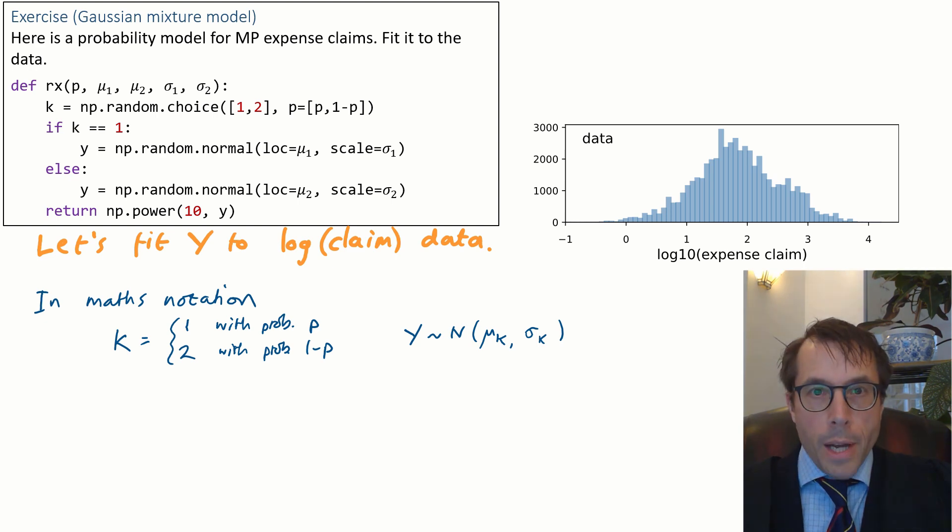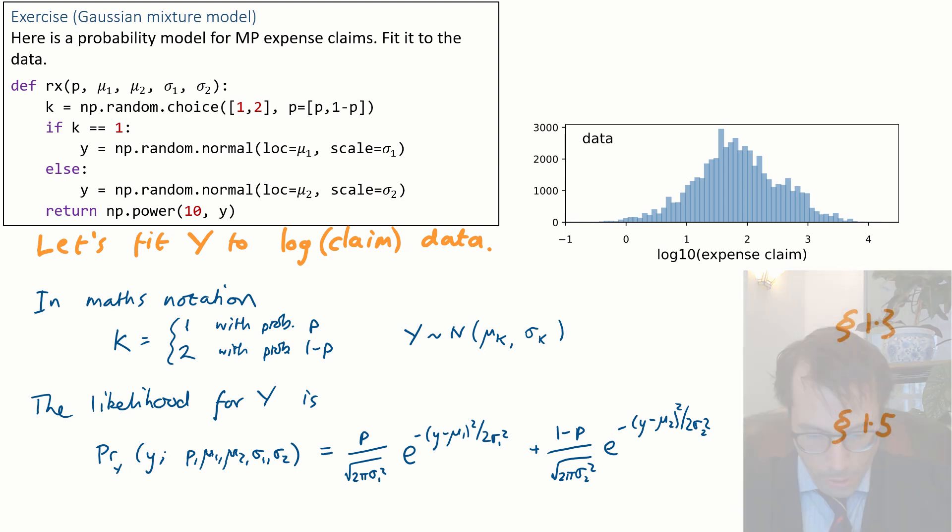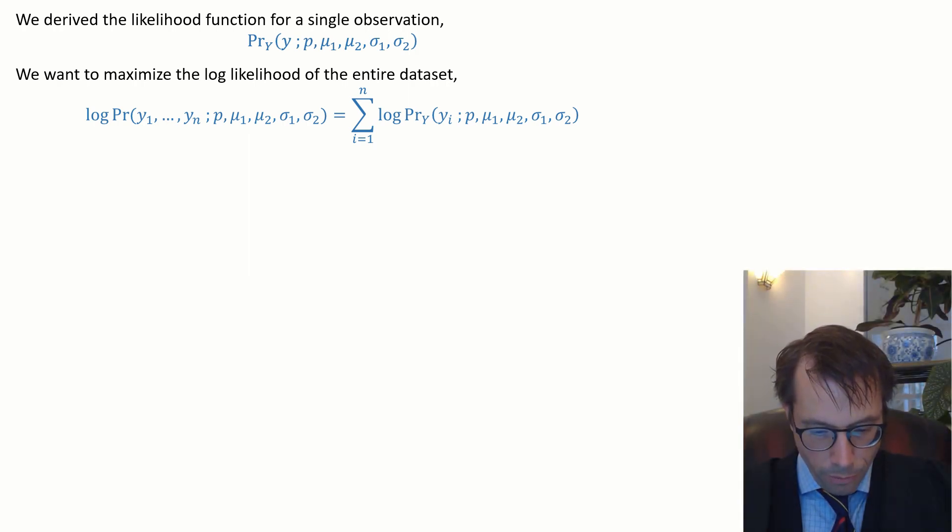Now we do some probability maths to get the likelihood function for this random variable y. I won't go through the details of this calculation. We covered calculations of exactly this sort in section 1.5. Next up, we go ahead and fit the dataset. We've derived the likelihood function for a single observation. Let's call it pr sub big Y of little y with all those parameters. And it's a generative model. We want to maximize the log likelihood of the entire dataset, log likelihood of y1 up to yn.